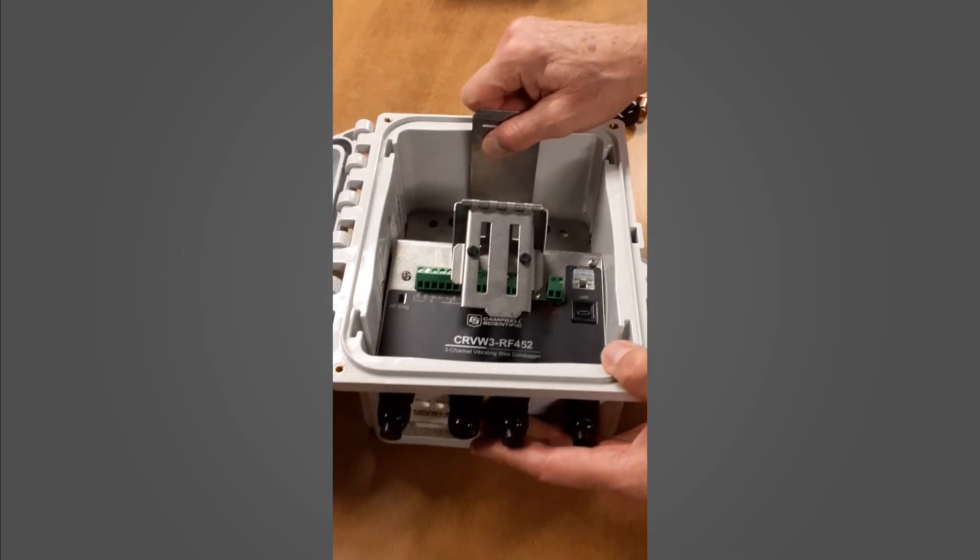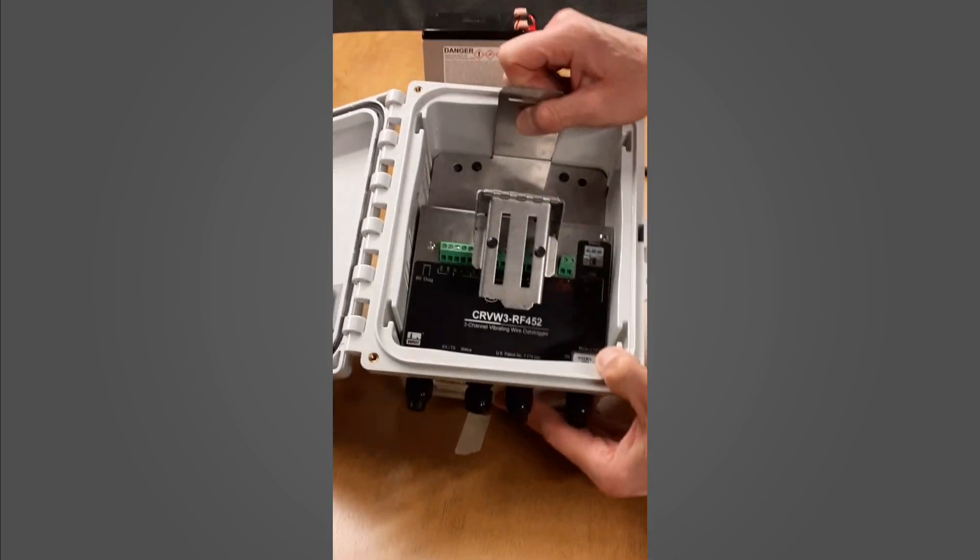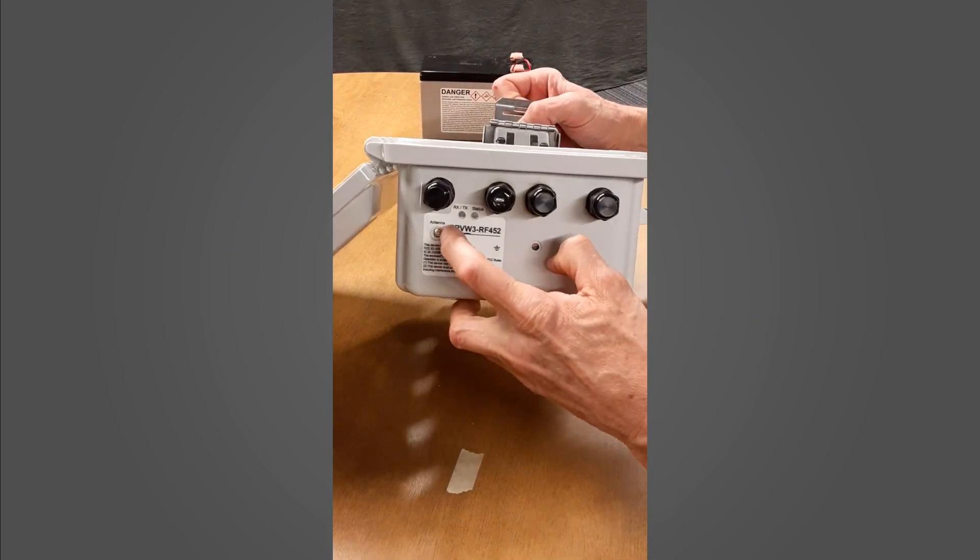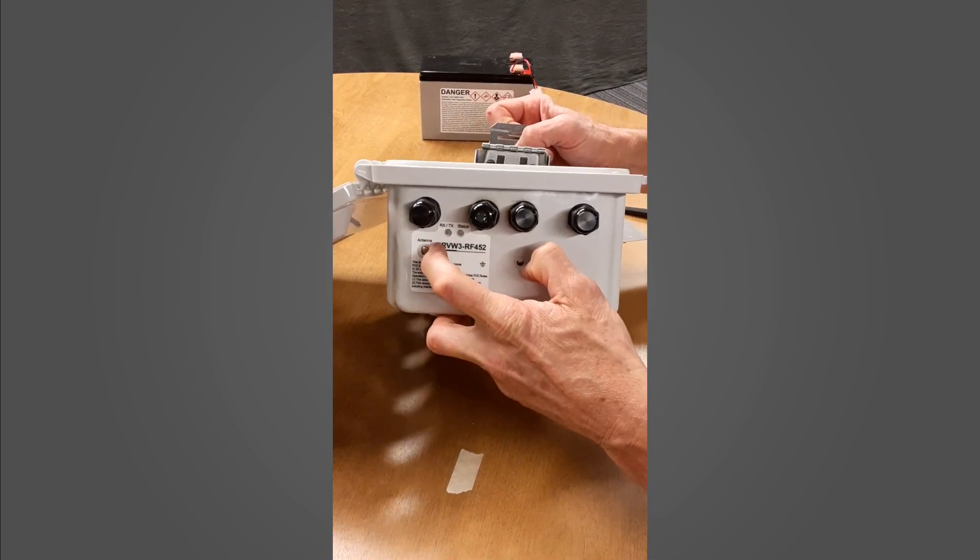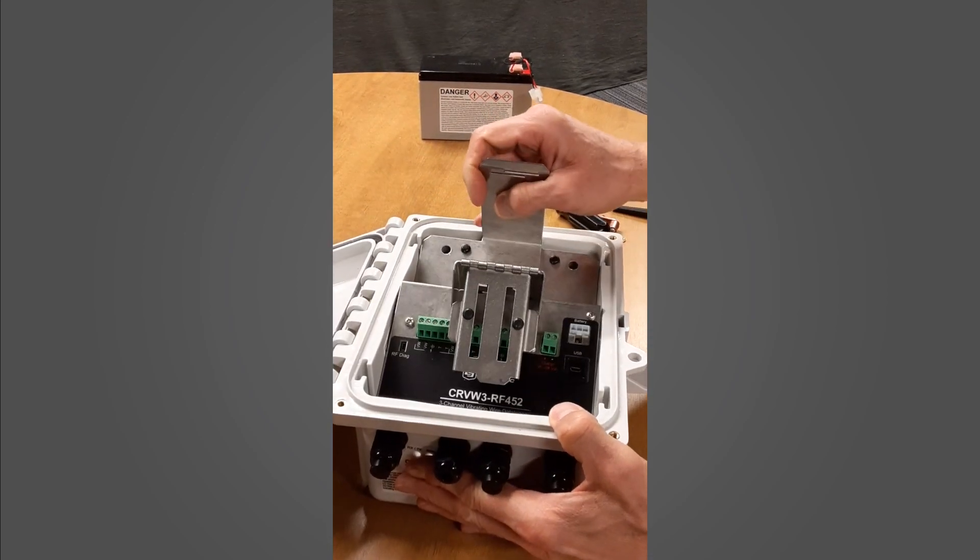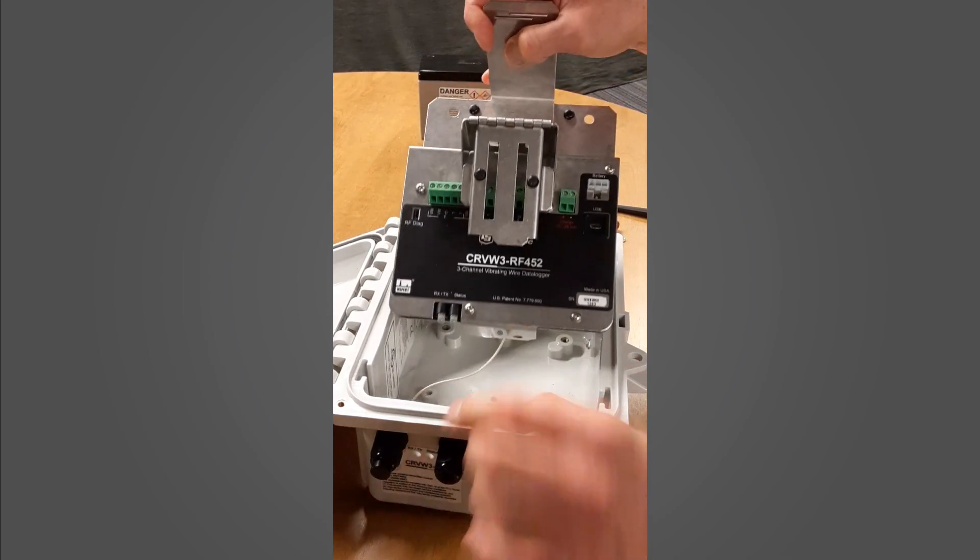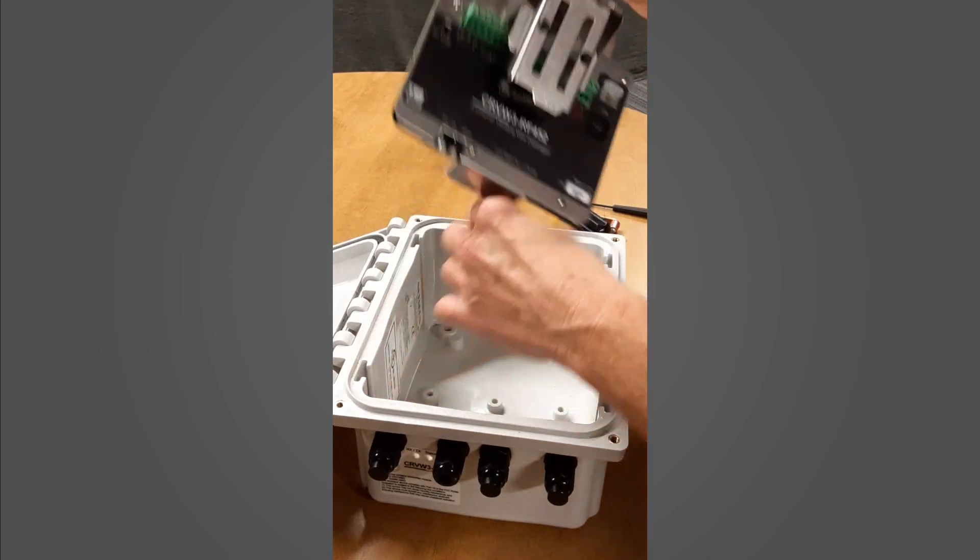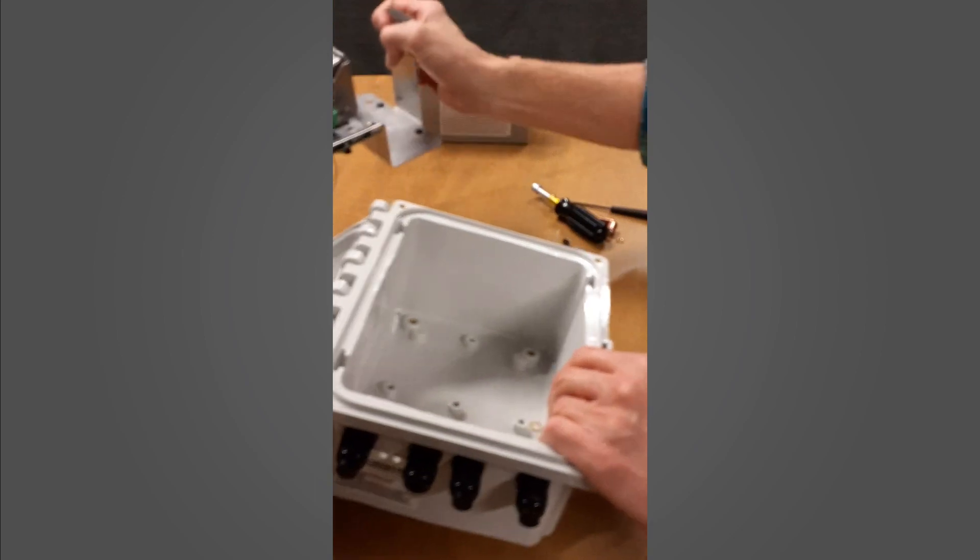In removing this from the enclosure, we push the antenna cable connector through the hole of the enclosure so it's not going to bind. We'll just pick this up and pull it out. And there's our screw.